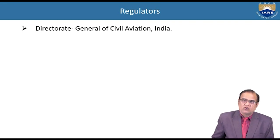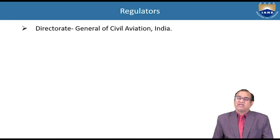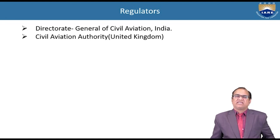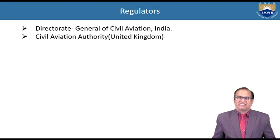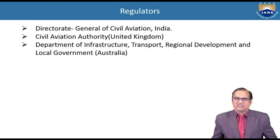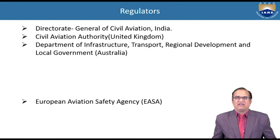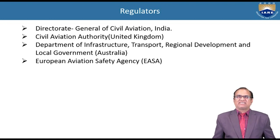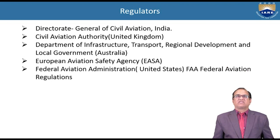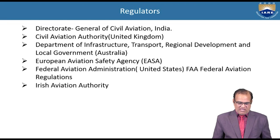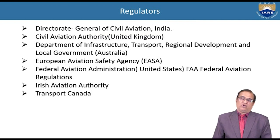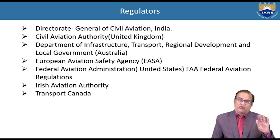Aviation regulators include the Director General of Civil Aviation for India, Civil Aviation Authority for the UK, Department of Infrastructure Transport and Regional Development for Australia, European Aviation Safety Agency (EASA), Federal Aviation Administration (FAA), Irish Aviation Authority, and Transport Canada. Every country has its own regulator.